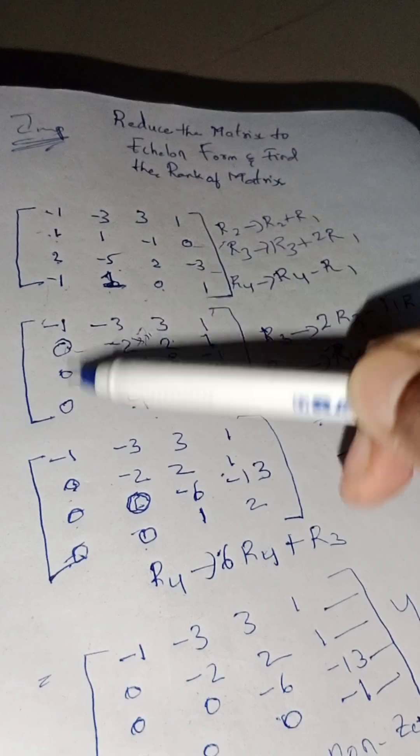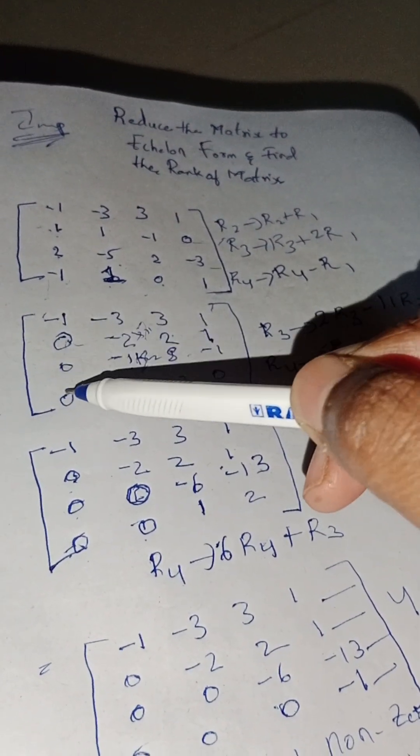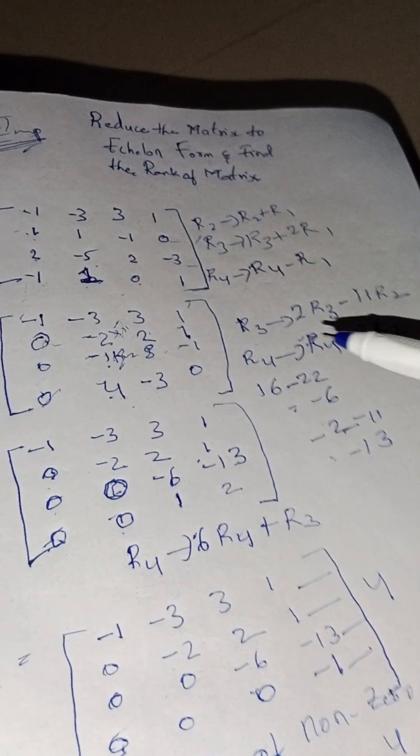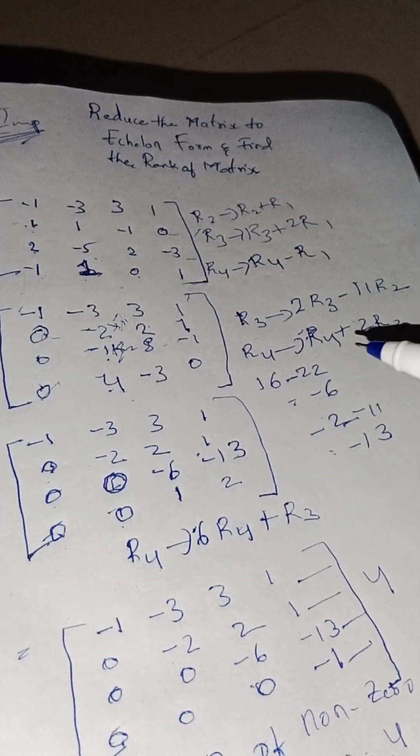After this we have to apply row transformation for R3 and R4 using R2. That is, R3 is 2R3 minus 11R2 because 2 times 11 is 22 and 11 times 2 is 22. R4 is R4 plus 2R2.